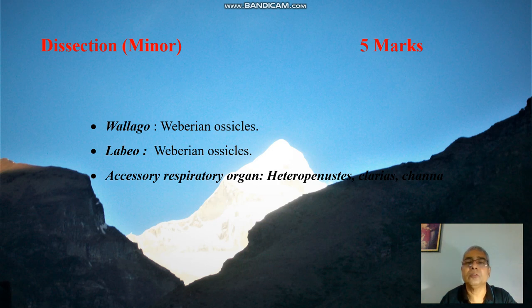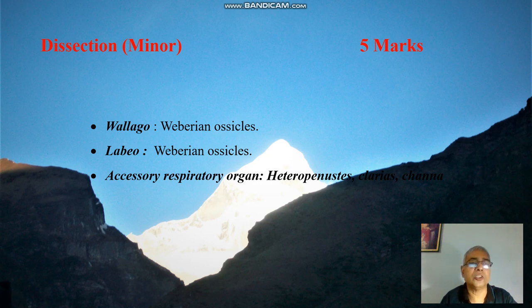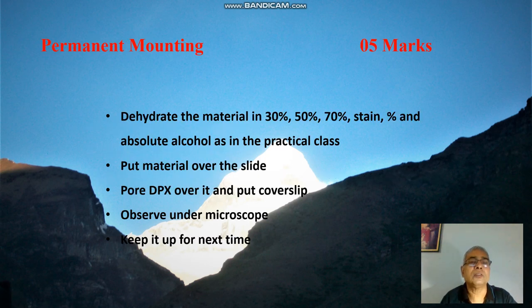The next part is minor dissection, which is 5 marks. Here, from a smaller fish, either you have to take out the Weberian ossicles or you have to expose the accessory respiratory organs of Heteropneustes or Clarias. Both these dissections you have to be prepared for.